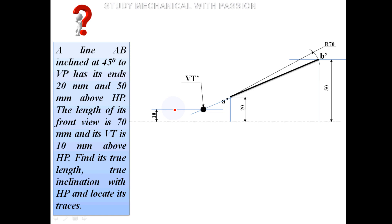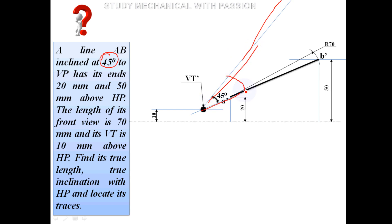The inclination phi equals 45 degrees. The front view A-dash B-dash makes a 45-degree angle with the true length. This 45-degree inclination is the phi angle — the angle between the true length and VP. This is how we mark the true length in the front view at 45 degrees.